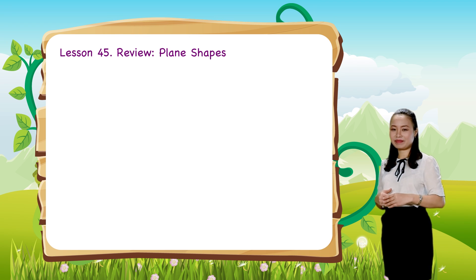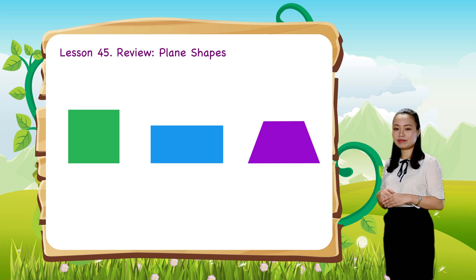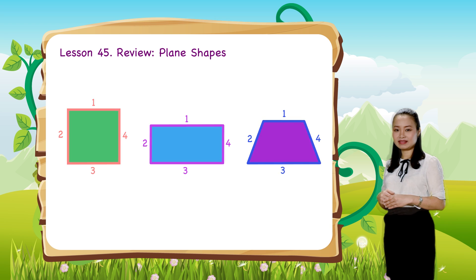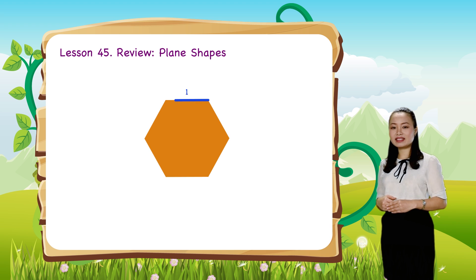Next, what shapes have four sides? So, the square, the rectangle and the trapezoid have four sides. What shape has six sides? So, the hexagon has six sides.